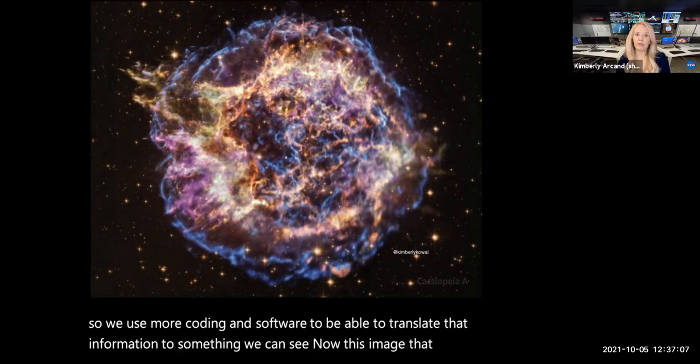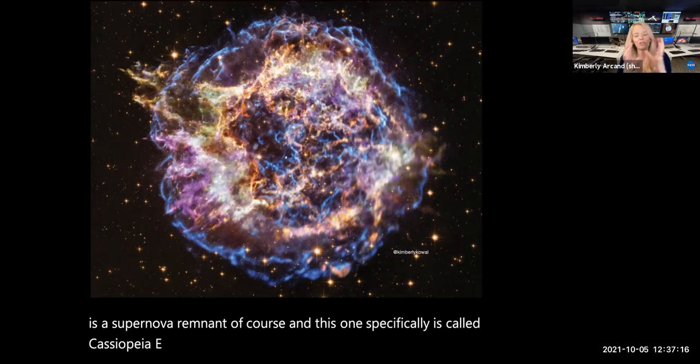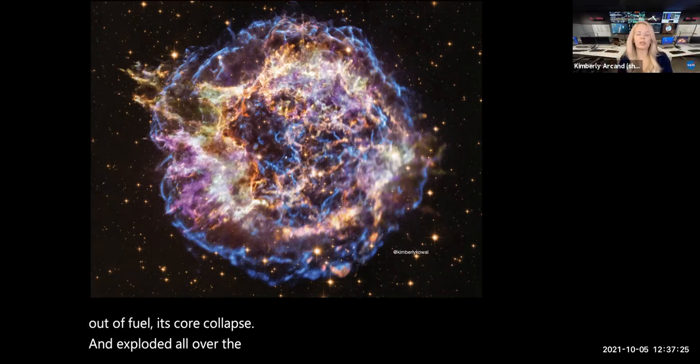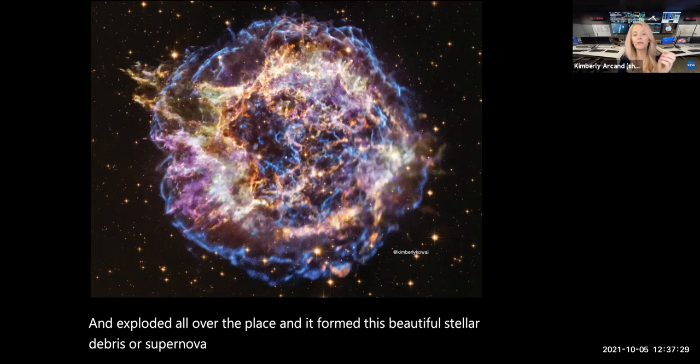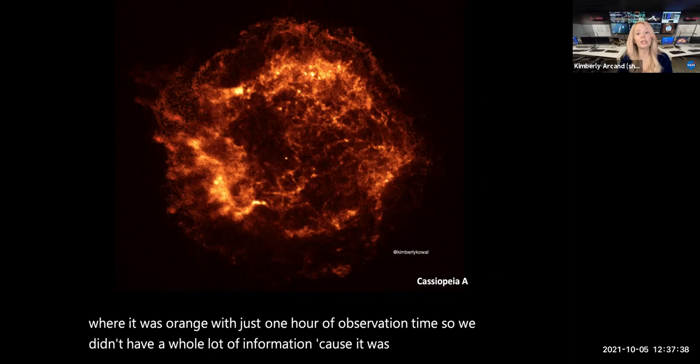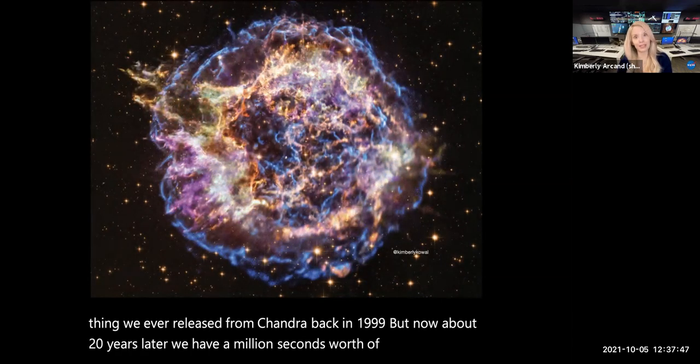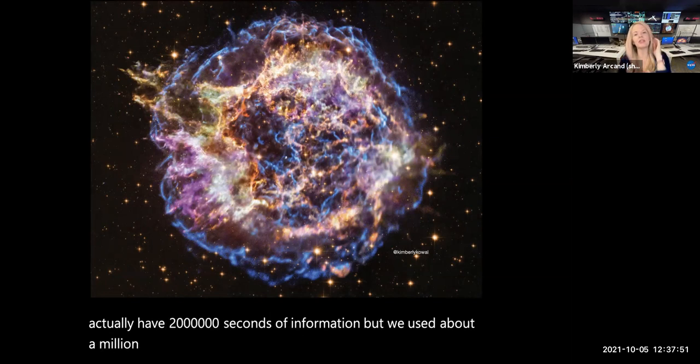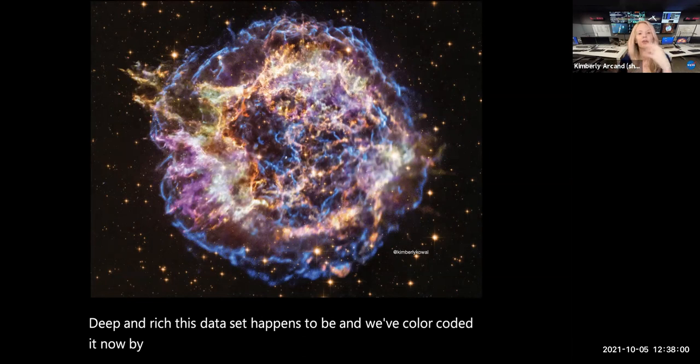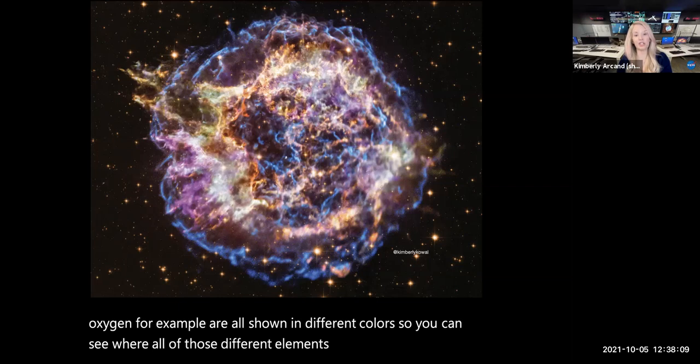Now, this image that we're looking at is one of my favorite objects in the entire universe. This is a supernova remnant, of course, and this one specifically is called Cassiopeia A. And it's this beautiful, massive star, way more massive than our sun, that grew old, that then ran out of fuel, its core collapsed and exploded all over the place. And it formed this beautiful stellar debris or supernova remnant. And that first image that I showed you where it was orange was just one hour of observation time. So we didn't have a whole lot of information because it was a very first thing we ever released from Chandra back in 1999. But now about 20 years later, we have a million seconds worth of information. We actually have 2 million seconds of information, but we used about a million of those seconds in this image in order to show how deep and rich this dataset happens to be. And we've color-coded it now by chemical element. So the iron, the silicon, the sulfur, the oxygen, for example, are all shown in different colors.